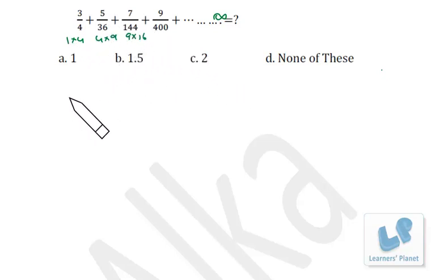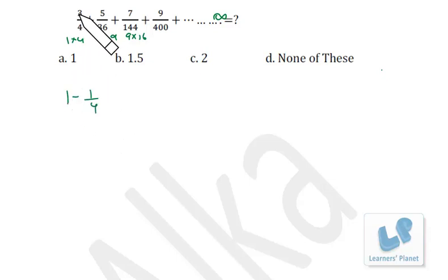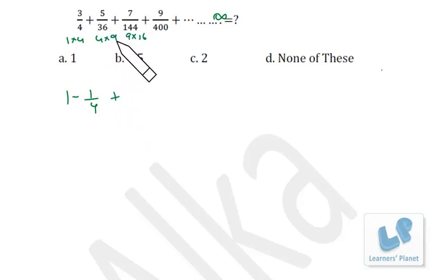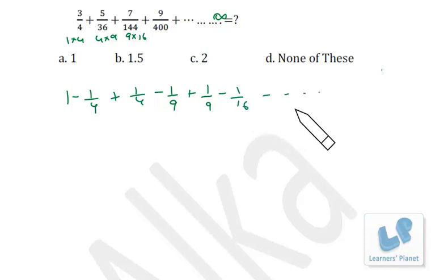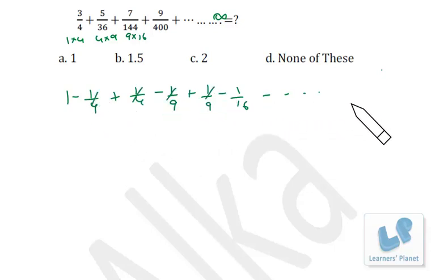The alternate way of writing this is: 3/(1×4) = 1/1 − 1/4, and 5/(4×9) = 1/4 − 1/9, and then plus 1/9 − 1/16, and so on. Gradually all terms will be cancelled — this is a telescoping series.